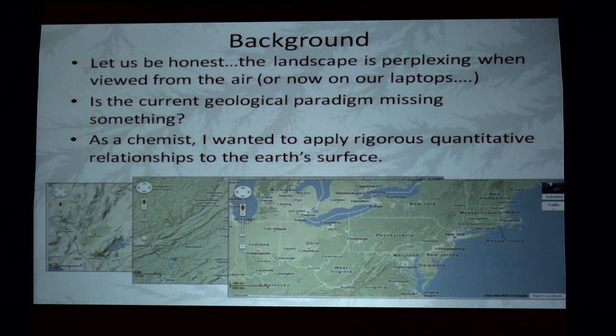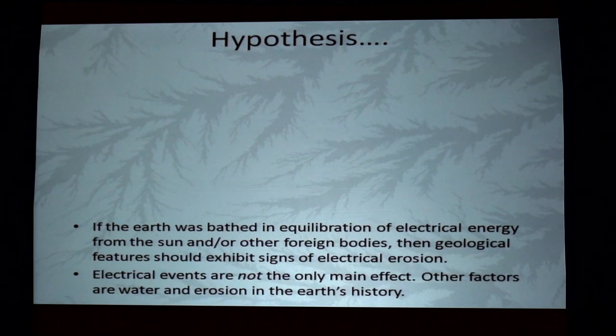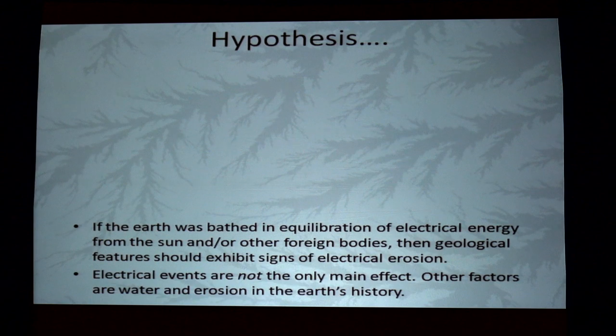In terms of scaling, when we back out from our small 10-square-mile aspect, we see very unique features at different scales. We can assume, at least for the hypothesis, that the Earth was bathed in an equilibration of electrical energy — from the sun, from the galaxy, from other bodies. That is an origins question and a different conversation. But what we can do is measure what's left over and see if we can draw any conclusions from that.